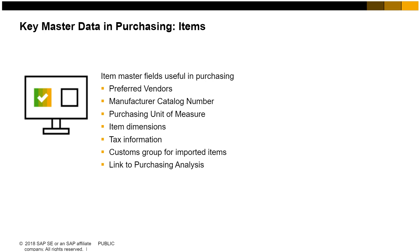Another key piece of master data in the purchasing process is item master data. Item master data identifies what is being purchased. Frequently, the same items are purchased, inventoried, and sold. The information is the same; it is just used differently. This is the advantage of using an item master record, which can be copied into any document in the purchasing, sales, production, MRP, inventory, and service modules.